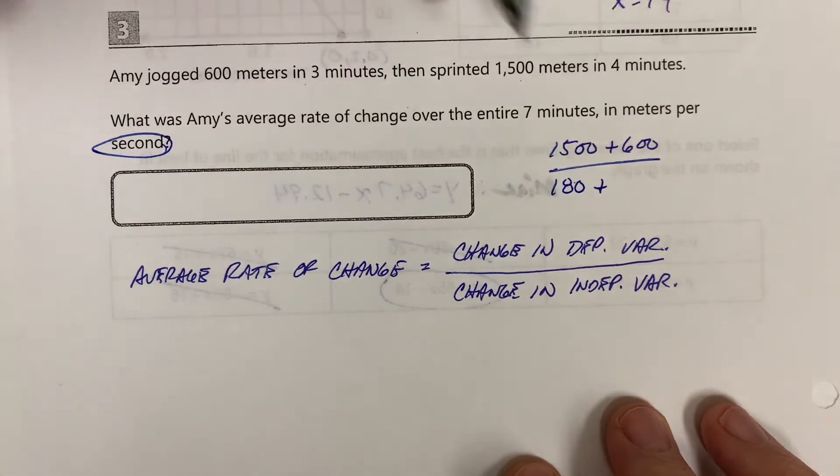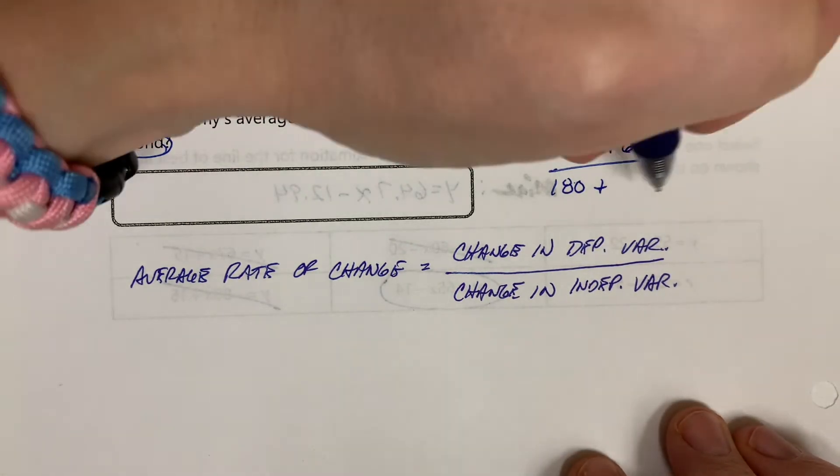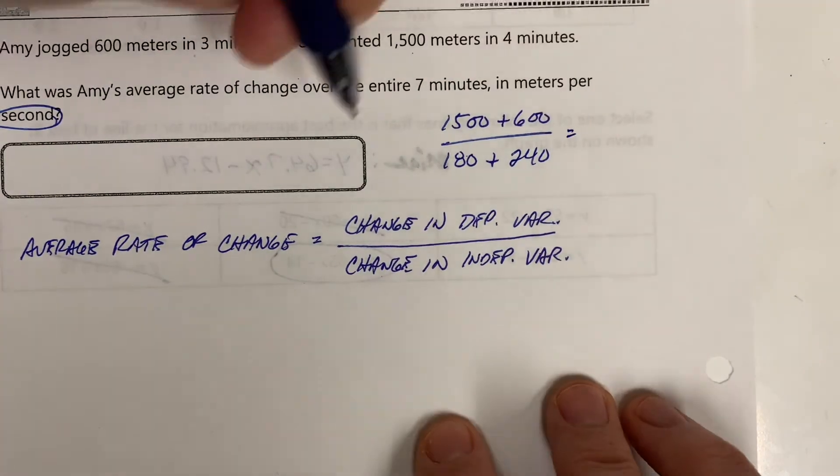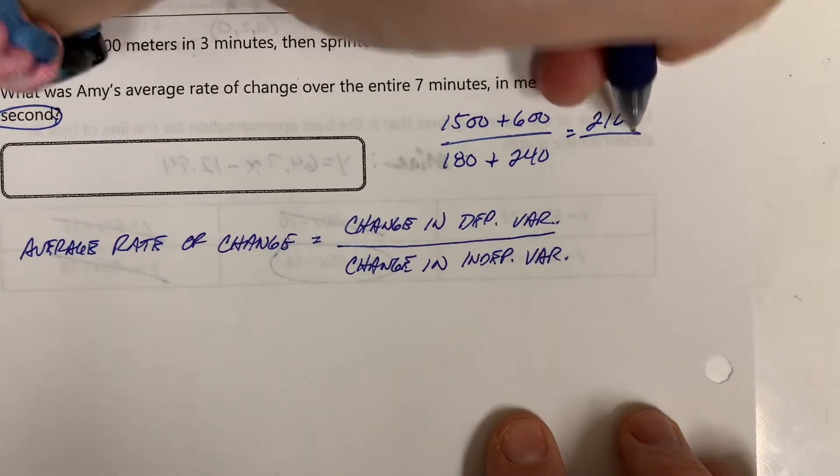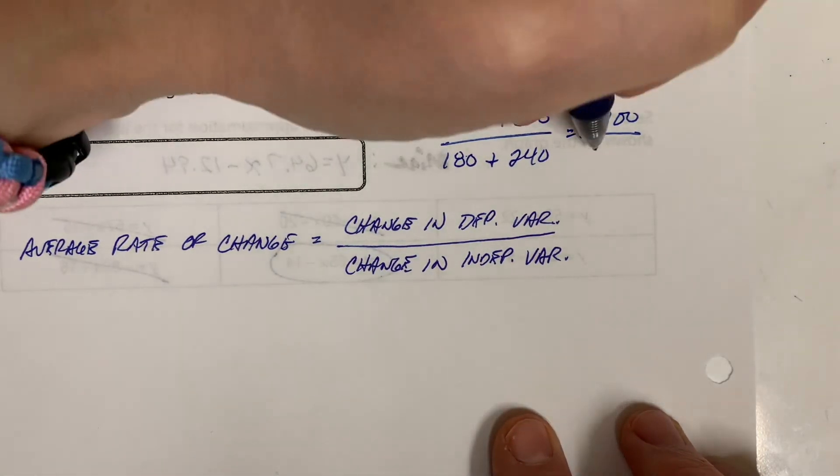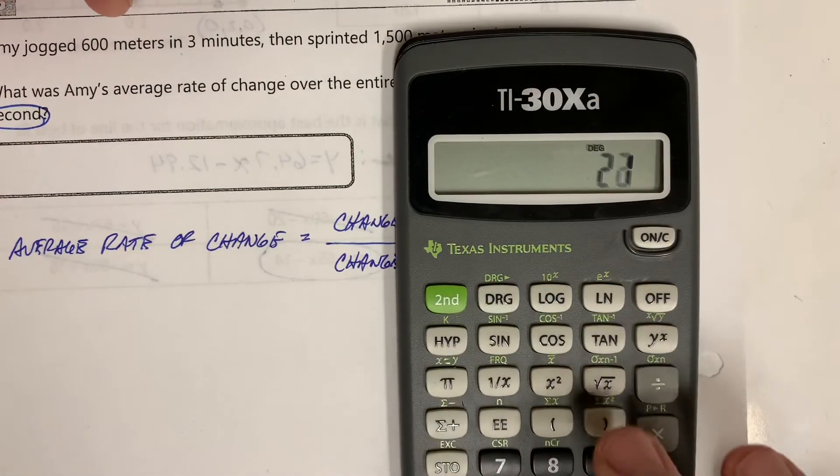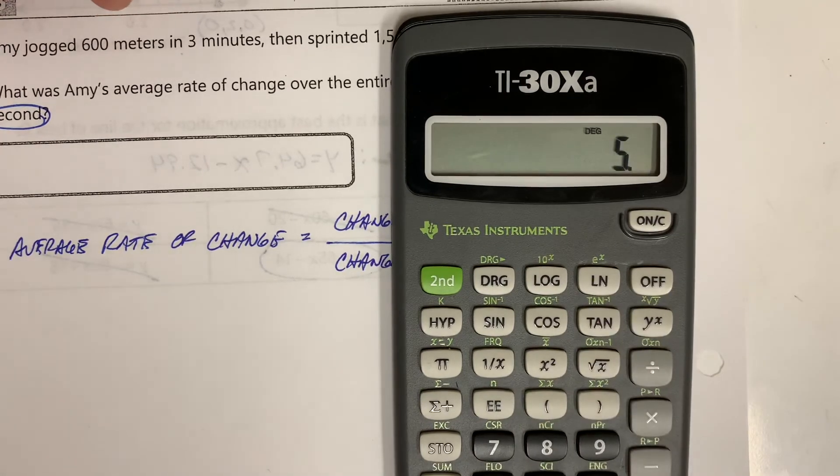Now we're going to calculate this. 1500 plus 600 is 2100. 180 plus 240 is going to be 420. If you actually divide those, 2100 divided by 420, you get 5. So in meters per second, that is going to be 5.